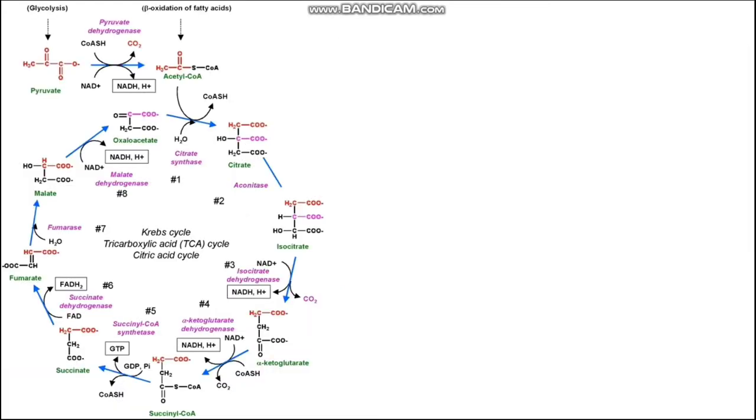First of all, what is Krebs cycle? Krebs cycle is a sequence of reactions by which most living cells generate energy during the process of aerobic respiration. It takes place in the mitochondria using up oxygen and producing carbon dioxide and water as waste products, and ADP is converted to energy-rich ATP in this mechanism of Krebs cycle.